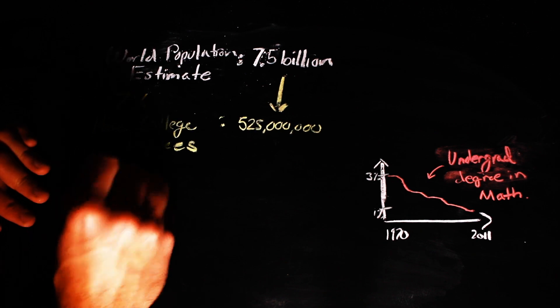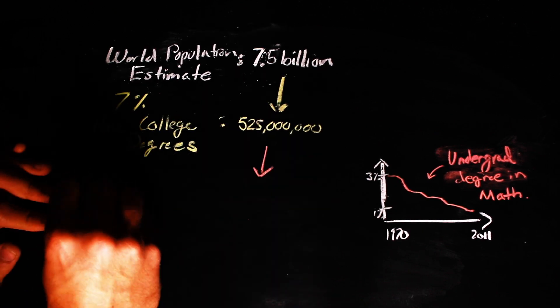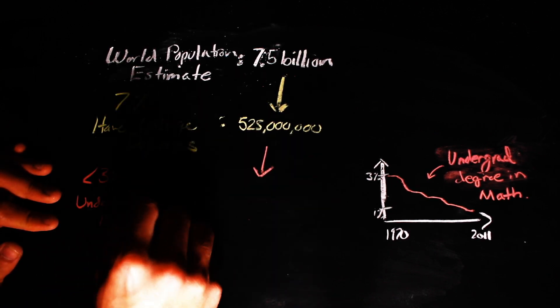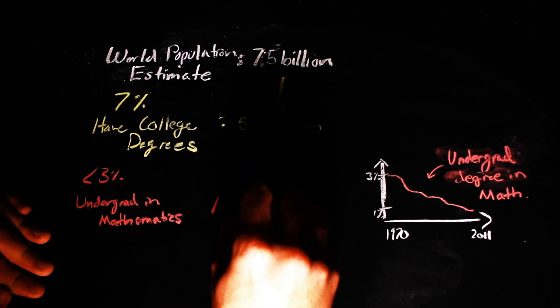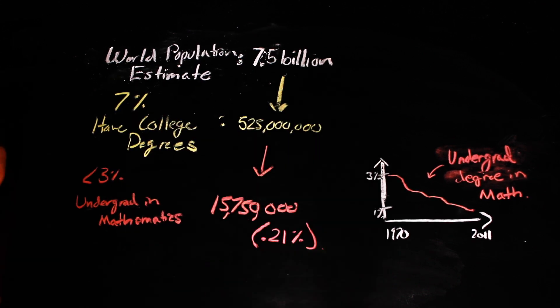However, we're going to overestimate and suppose that 3% of graduates have a degree in mathematics or statistics. That means that only around 1.21% of the world's population have some recognized understanding of mathematical proof.